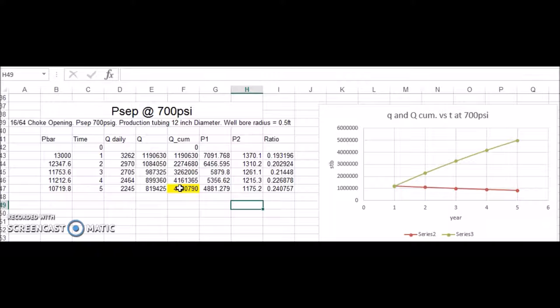So we saw really negligible changes in production using the three different separator pressures. And we believe this is because we are in critical flow. And the way we calculated critical flow in this worksheet is by using the rule of thumb that if P2 divided by P1 is less than 0.7, then we are in critical flow, where P2 is the pressure just after the choke and P1 is the pressure just prior to the choke.